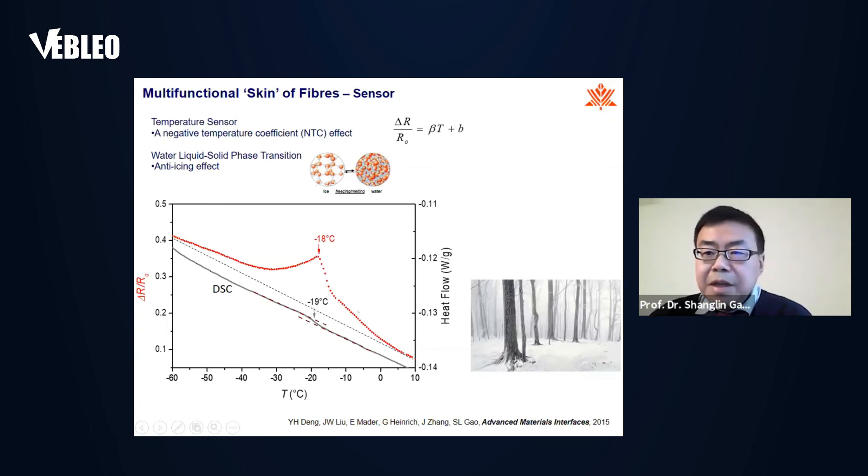Besides, because of the very thin layer of water on the fiber, we can make use of this sensor to find the phase change temperature of this very thin layer of water. And we found that this phase change temperature is much lower than zero degrees. So the thin layer of water seems to have an anti-icing effect. So this might help explain why the wood can keep water in the cell wall that is very thin there, so they can survive in the winter because no phase change is involved.